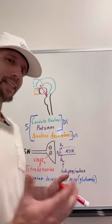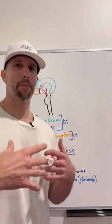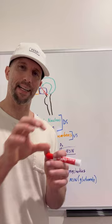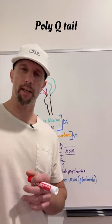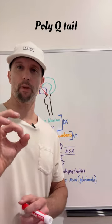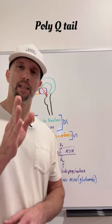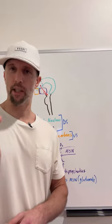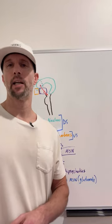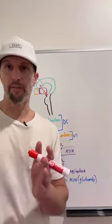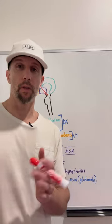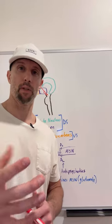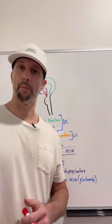With Huntington's disease, you have this protein, and at the end of the protein it has a poly-Q tail — Q stands for glutamine. You have these nucleotide repeats: CAG, CAG, CAG. In normal individuals you may have up to about 35 of these CAG repeats, which produce just a bunch of glutamines in a row. Remember, you have codons that code for amino acids.